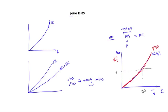Notice that the supply curve is increasing with prices — the higher the price, the more the firm wants to supply. The intuition is very simple: the higher the price, the more units the firm can produce at a marginal cost lower than that price.